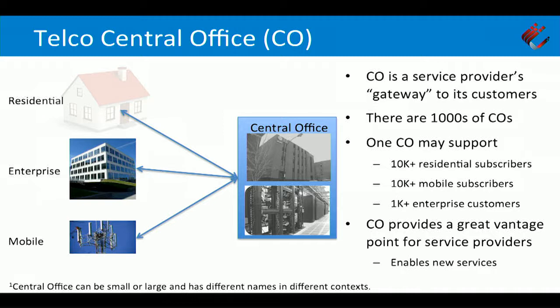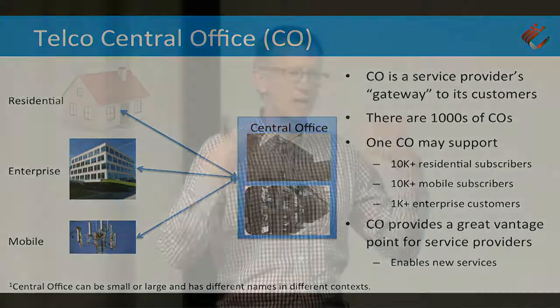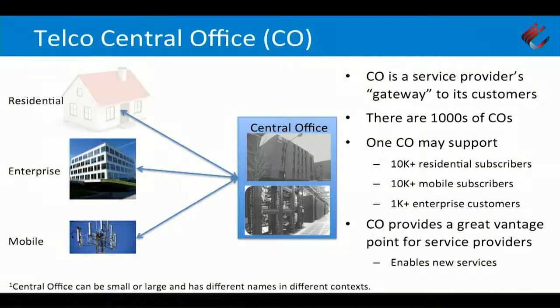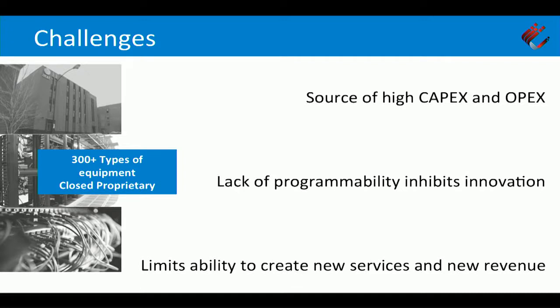There are thousands of central offices. They are the point at which all the fiber and backhaul networks come in connecting enterprises, residences, and mobile customers. It is the key vantage point for providing edge services. We all know there are tons of services in the cloud, back in the data center — but what are the services we can also provide at the edge, and why not make that edge easier to manage from a service provider point of view?